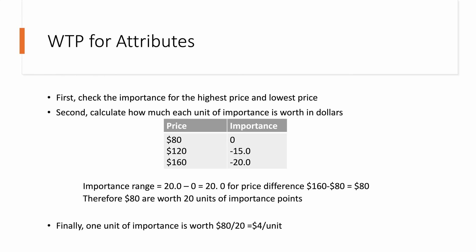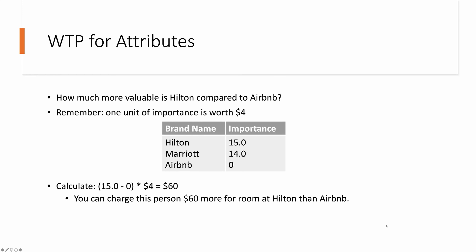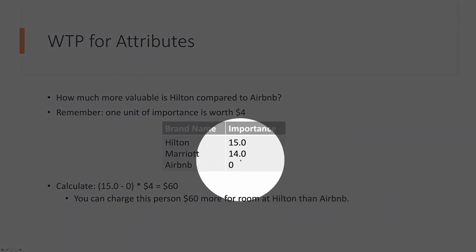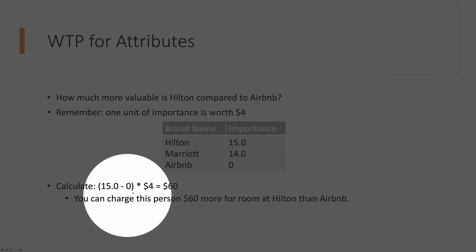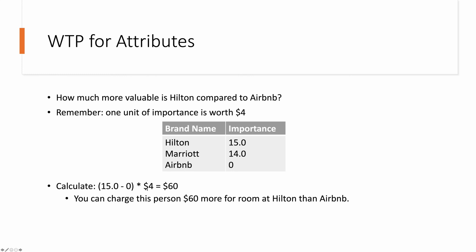That, at the end of the day, is consumers' willingness to pay for those different features. Let's say we ask the question: how much more valuable is Hilton compared to Airbnb? Remember that one unit of importance is worth $4, as we have just calculated. Hilton is 15 points above Airbnb in terms of importance — so 15 minus 0. Then the 15 points times $4 per point, we get $60. What this means is this consumer is willing to pay $60 more for a room at Hilton versus Airbnb. Similarly, we can calculate how much consumers are willing to pay for beachfront versus in-city location, and so on for all the different attributes.